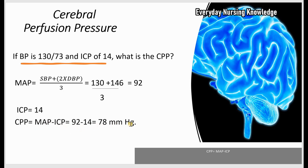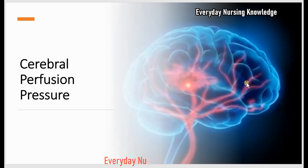The CPP is normal. The normal range is anywhere from 60 to 100 mmHg, and this normal CPP maintains adequate blood flow to the brain. Today we learned about cerebral perfusion pressure — thanks for watching.